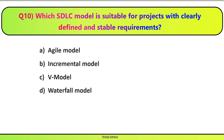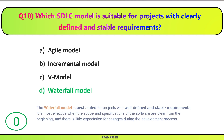Question 10. Which SDLC model is suitable for projects with clearly defined and stable requirements? Agar aap ki requirements stable hai aur clearly defined hai, toh kaunsa SDLC model use karna chahiyye — Agile model, Incremental model, V model, ya Waterfall model? Correct answer is D. Waterfall model is best suited for projects with well-defined and stable requirements. It is most effective when the scope and specifications are clear from the beginning and there is little expectation for changes during development.